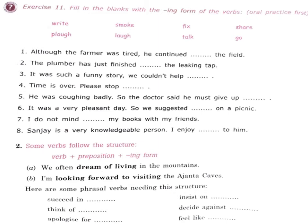Exercise 11: 'Although the farmer was tired, he continued plowing the field' — plowing: P-L-O-U-G-H-I-N-G. 'The plumber has just finished fixing the leaking tap' — 'fix' becomes 'fixing' with 'ing' added. Choose the word from the box, add 'ing', and put it in the bracket to make the sentence correct.